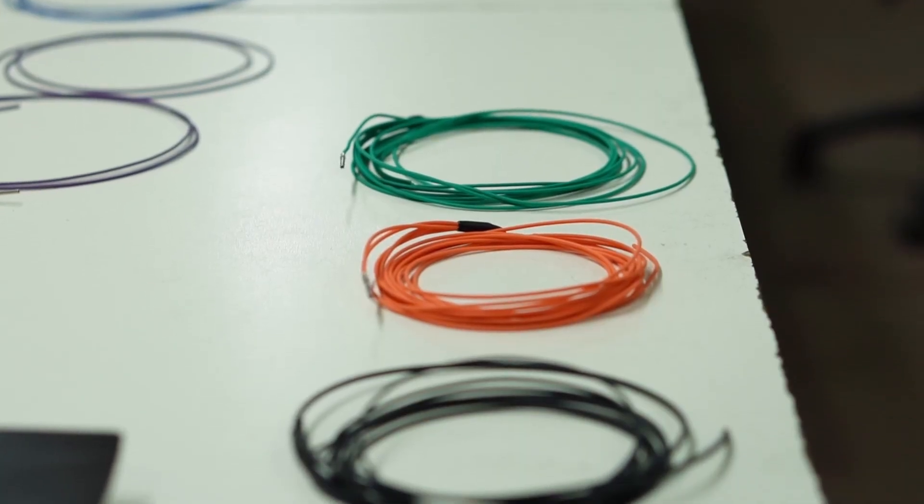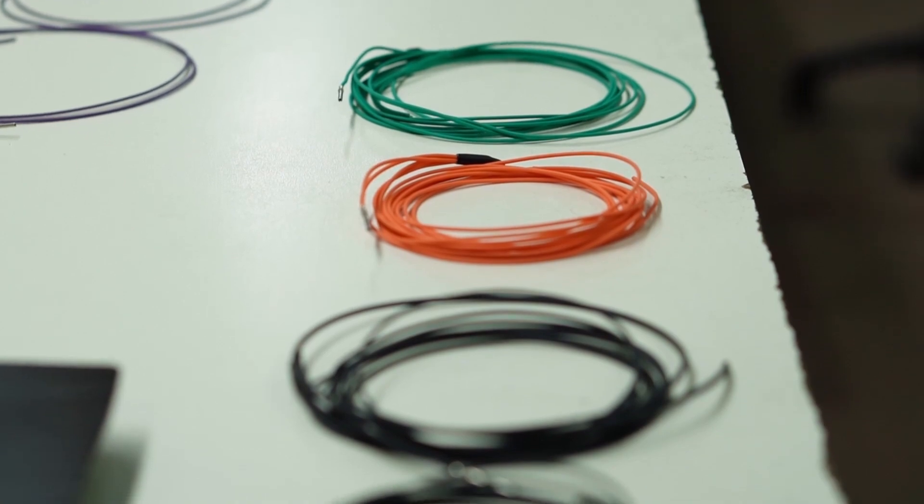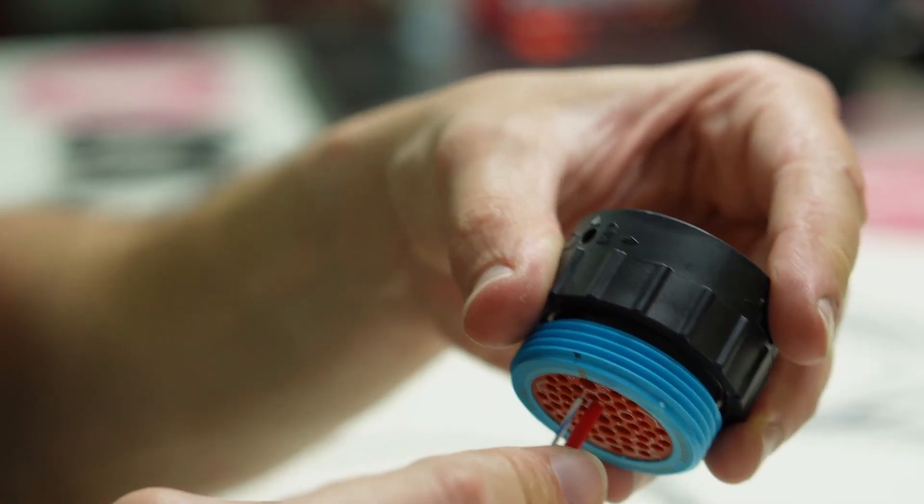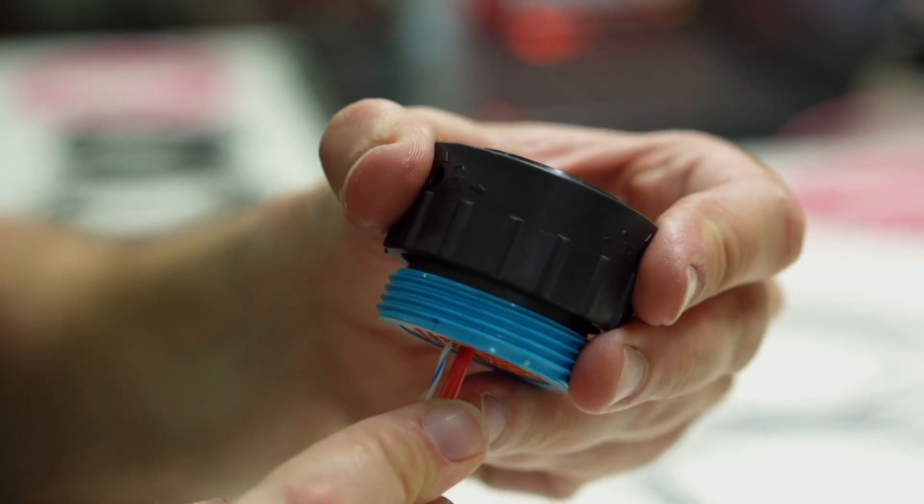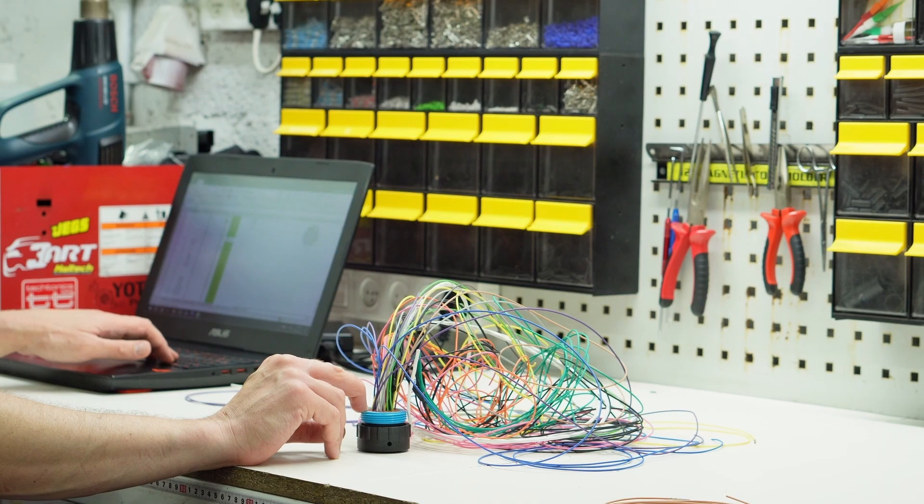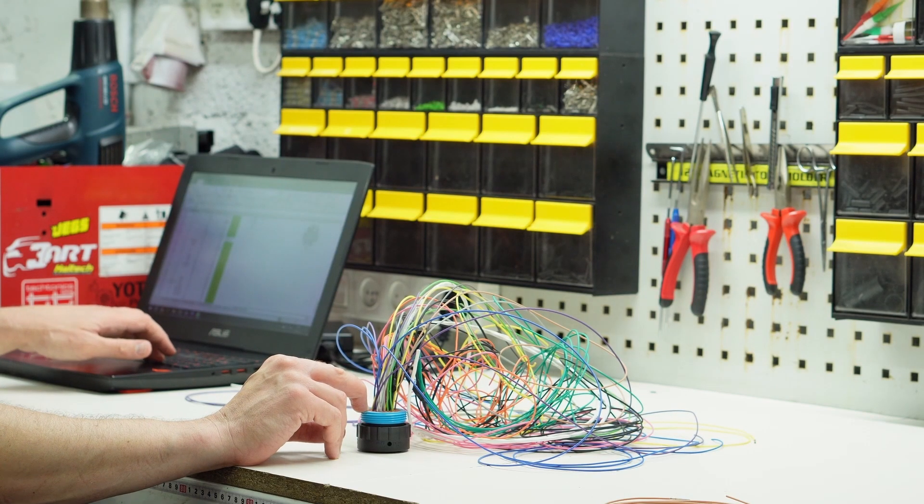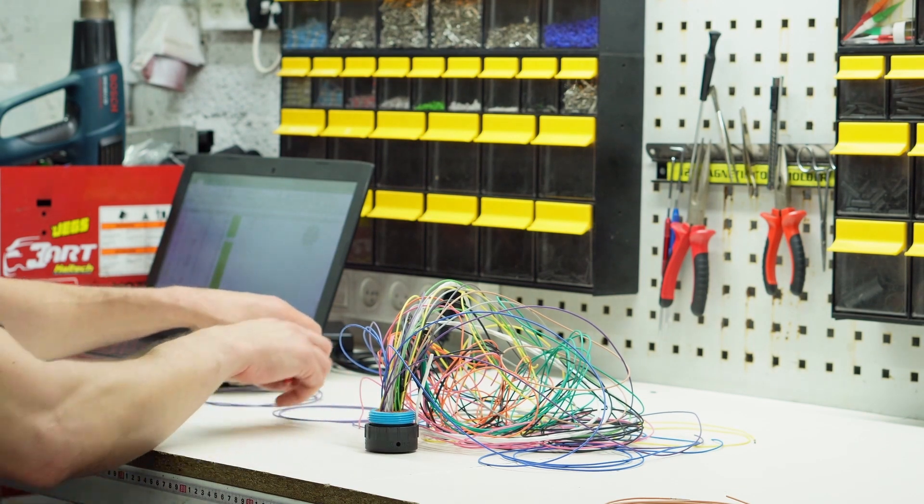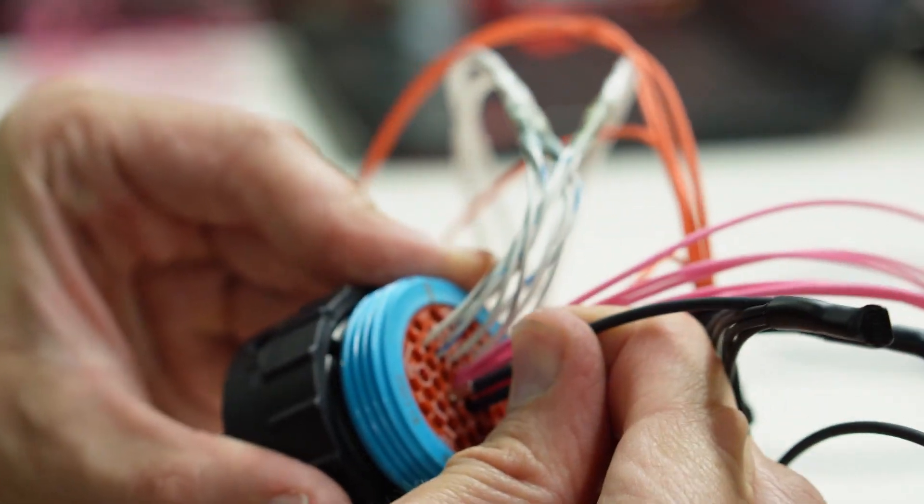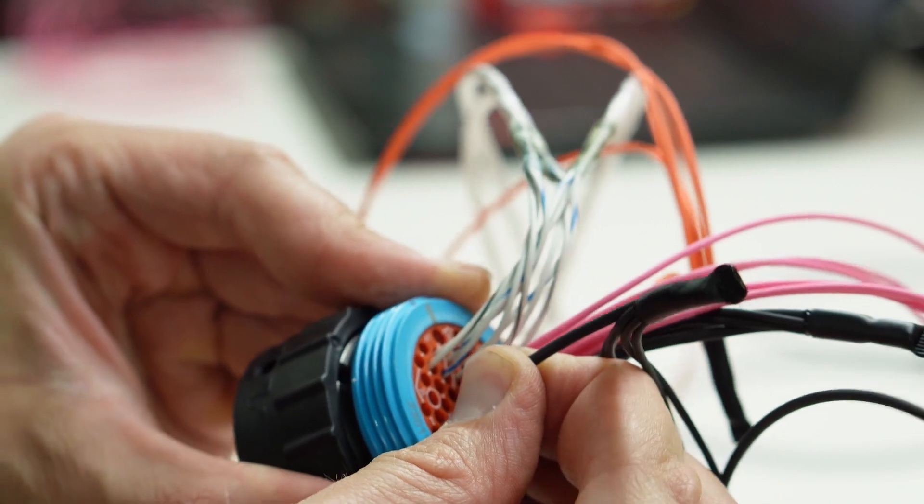Once all the wires have been prepared and the splices have been done it's time to populate the bulkhead connector. Now when doing this you'll want to take your time and make sure that each pin goes into its dedicated slot. There are two things you can do to help prevent messing this up. Number one always work with the documentation you prepare to double check that the slot number matches the wire color you're about to pin. The second thing could be to measure the wire you're about to pin to confirm it suits the wire length of the component listed in the connector slot.